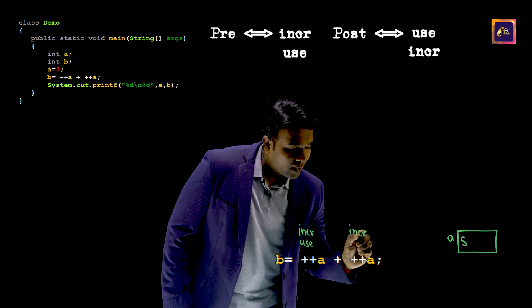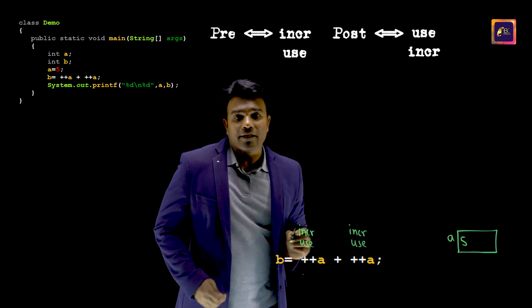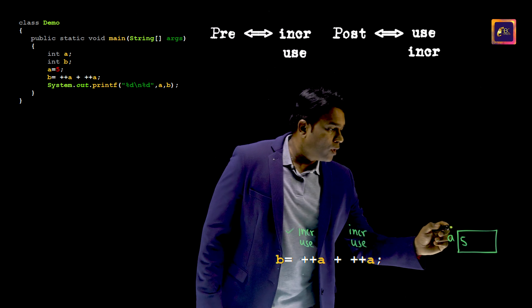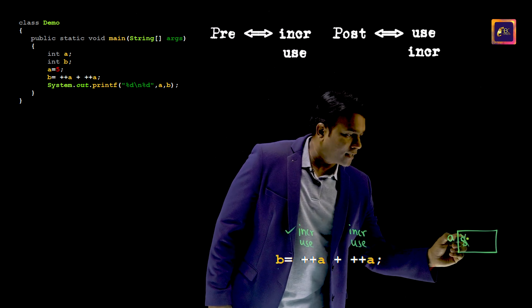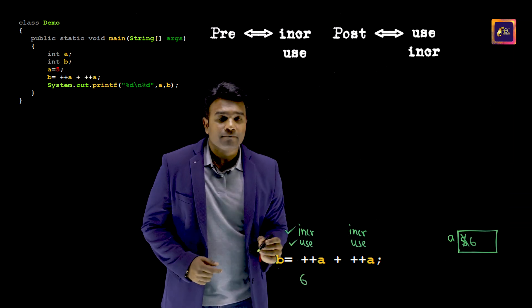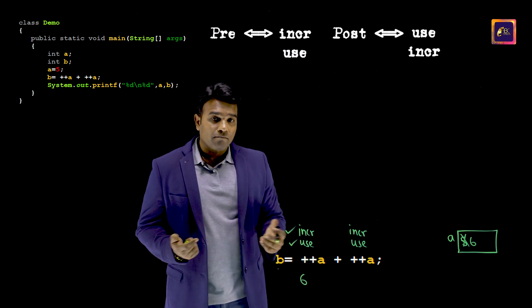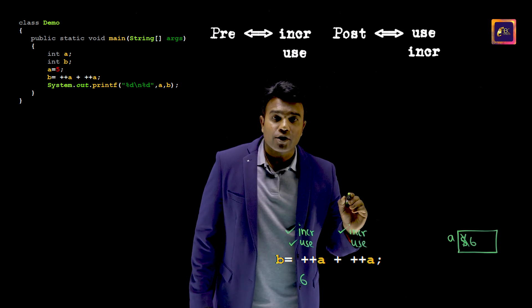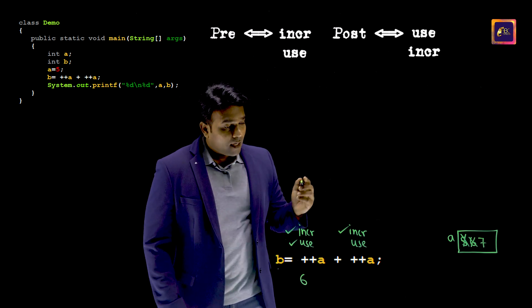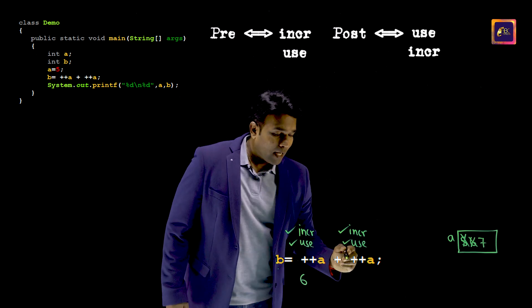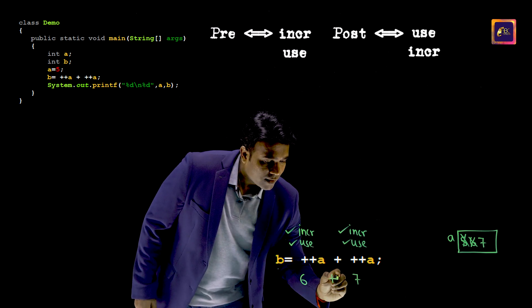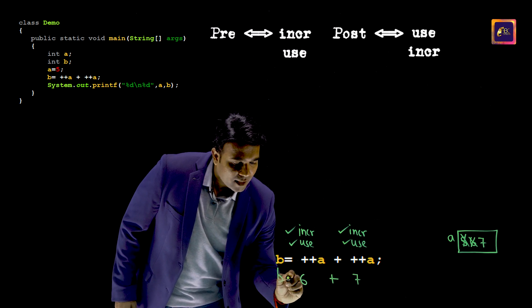So I will have to increment first, then use it later. Now increment: I am going to increment this 5 and make it 6. Next, use — so I am going to use that 6. Next, I need to increment again, so it becomes 7, and I have to use it — so I am going to use that 7. In other words, 6 plus 7 is what gets into B.